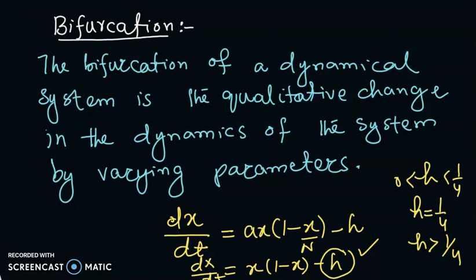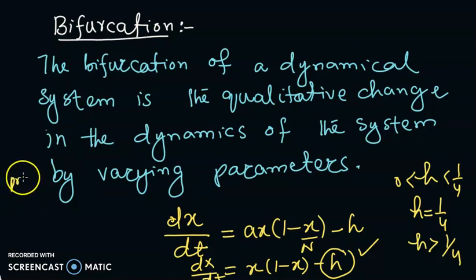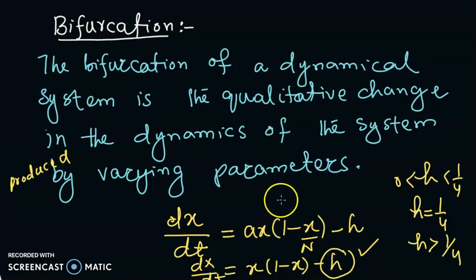Let's do one more example where we will be analyzing the bifurcation of a dynamical system. The bifurcation of a dynamical system is the qualitative change in the dynamics of the system produced by varying the parameters.